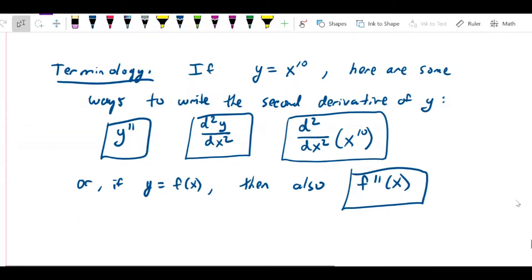I wanted to give you the terminology used for second derivatives in various contexts. Let's suppose we have y = x^10. Here are a couple of different ways we can refer to the second derivative of y. One is we can put two prime symbols after the y and call it y''. The second one is d²y/dx². The squared is in a different position here, and it looks a little bit idiomatic.